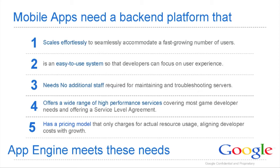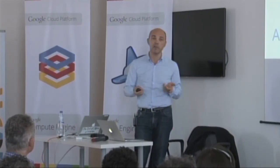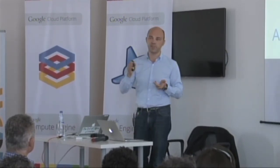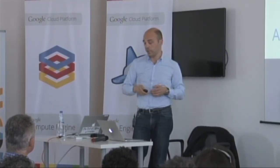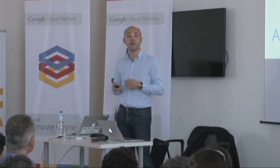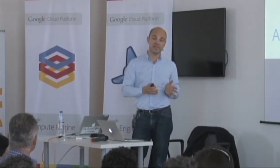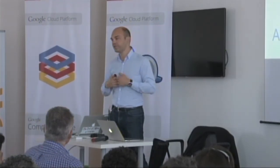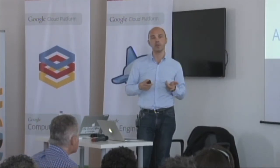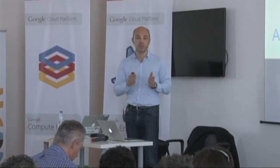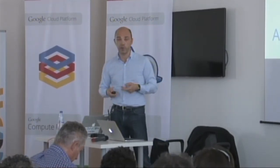Regarding high performance, service level agreements, and pricing: you can launch App Engine at cloud.google.com. But if you're interested in a higher level of support, you can contact us and ask for more. We offer different kinds of support — bronze (default), silver, gold, and platinum. For instance, if you want to launch a business-critical application, you may want 24/7 support.